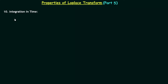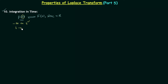In this lecture we will understand the tenth property — integration in time. To understand this property, let's take a time domain signal f(t) whose Laplace transform is F(s) with region of convergence R. We will integrate f(t) from minus infinity to an instant of time t, replacing t by a dummy variable tau, giving us the integral of f(tau) d(tau) from minus infinity to t.